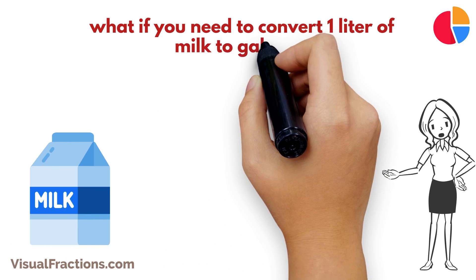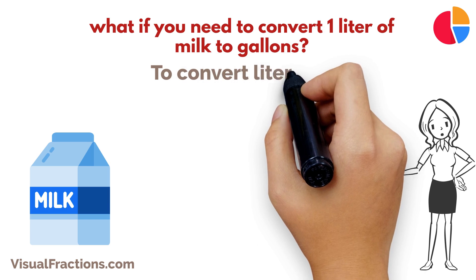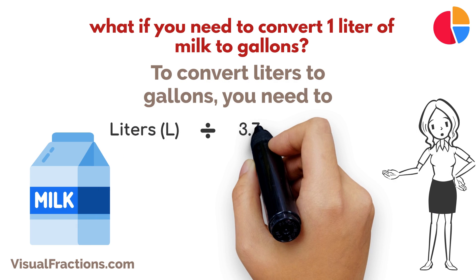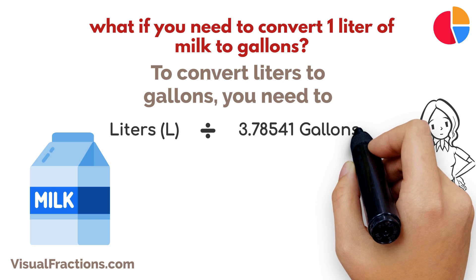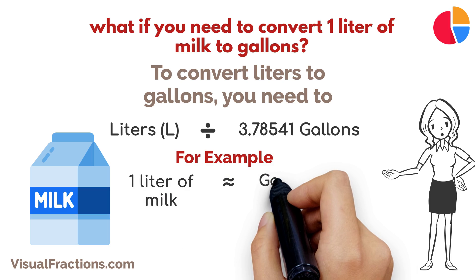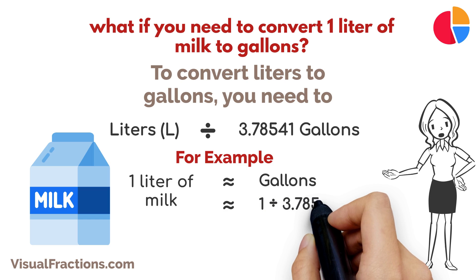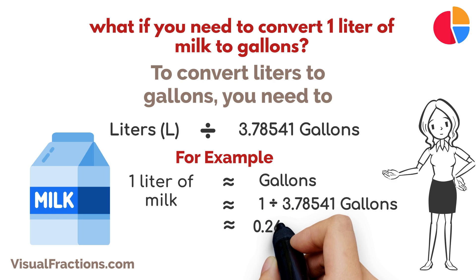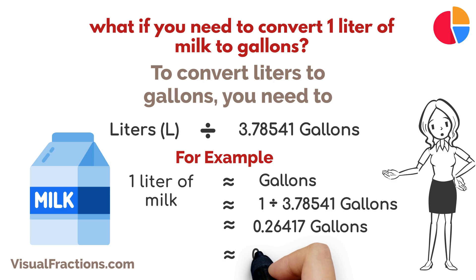But what if you need to convert one liter of milk to gallons? Don't worry, we've got you covered. To convert liters to gallons, you need to divide the number of liters by the conversion factor of 3.78541. We start by dividing one by 3.78541, which gives us approximately 0.26417 gallons.